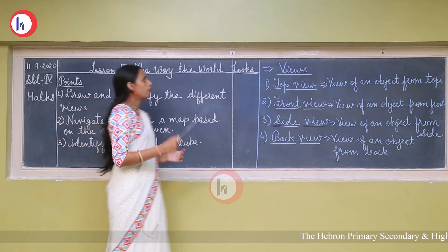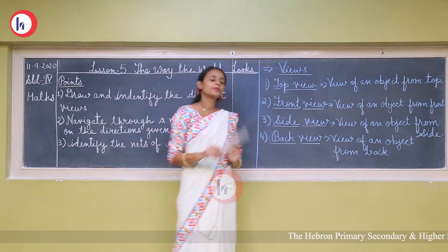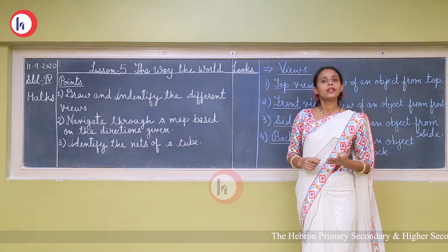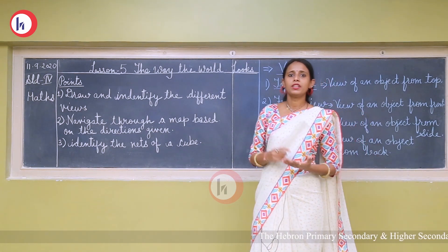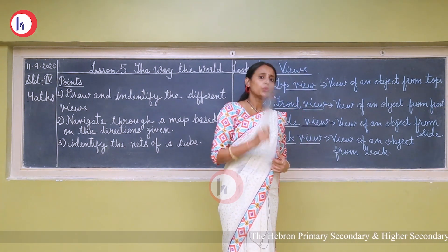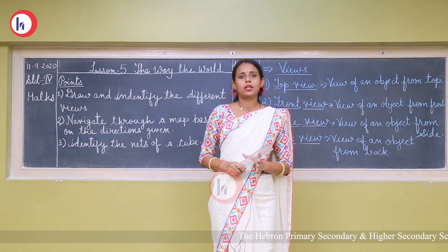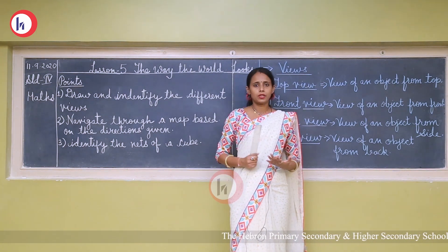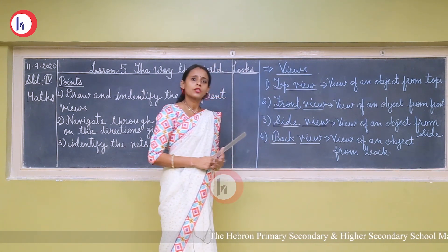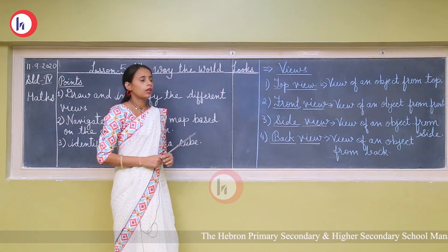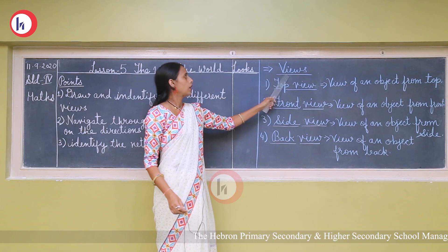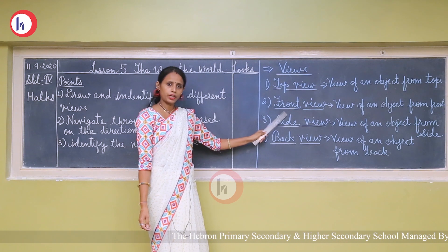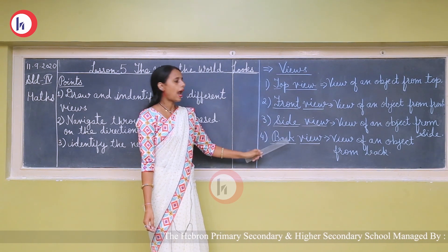Now let's come to our first point, which is views. In your previous standard you have learned about different views and that different objects have different shapes. Do you know why a single object looks different when you are seeing it from different positions and distances? There are four possible views: top view, front view, side view, and back view.